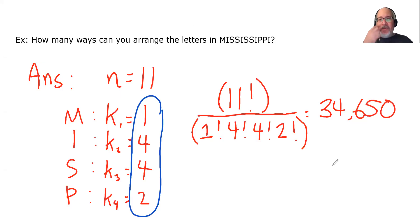So that's how you count the number of permutations of objects when some of the objects are indistinguishable from each other. In other words, some of them are repeated.